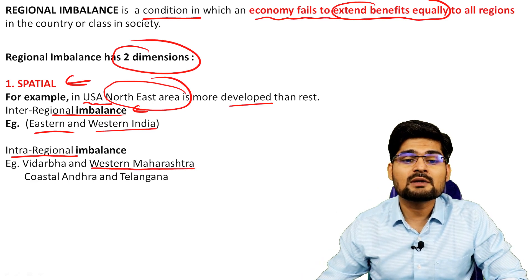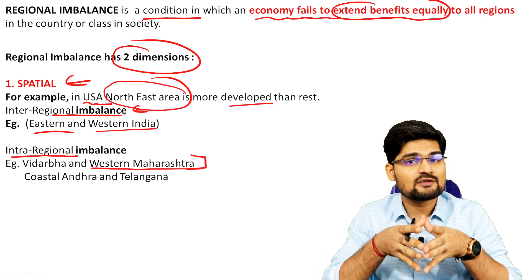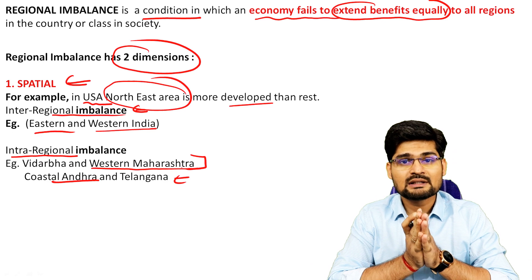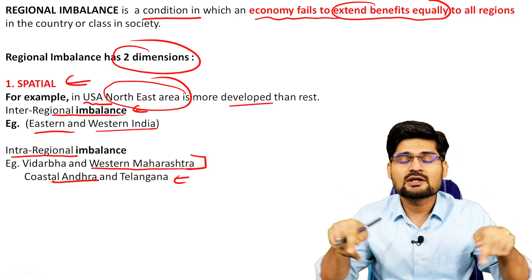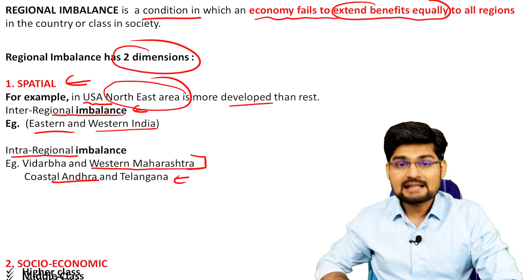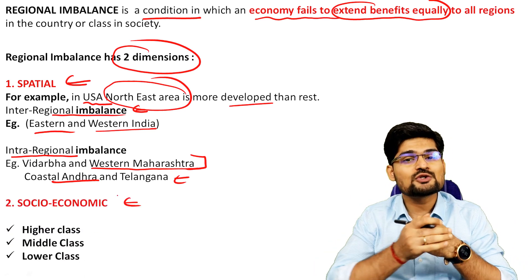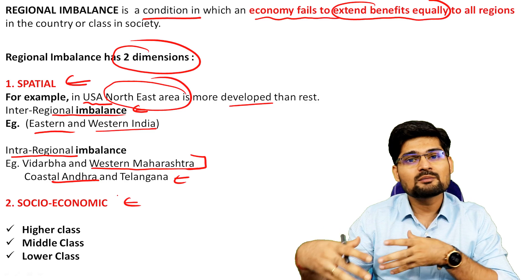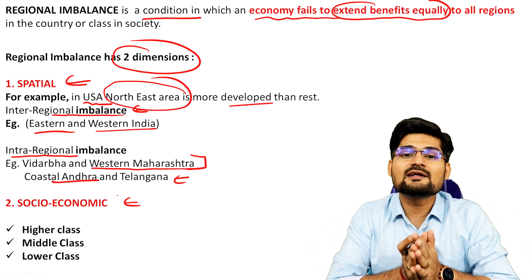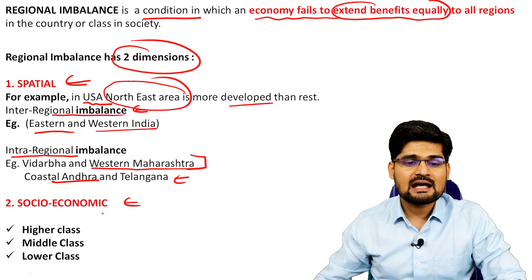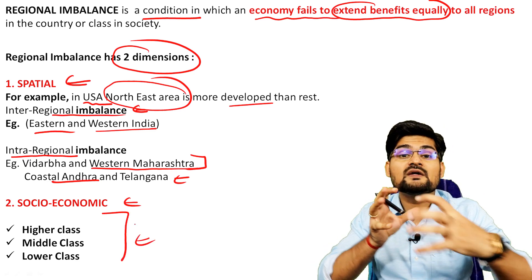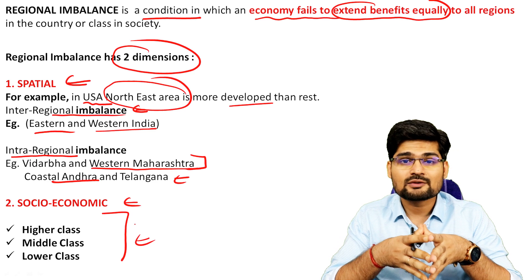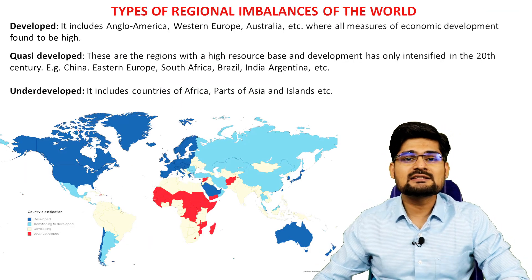Intra-regional imbalances also exist within the same region. For example, Vidarbha and western Maharashtra within the same state show different developmental levels. The coastal Andhra, Seemandhra, and Telangana debate is another case. The second dimension is socio-economic — talking about classes of people: high class, low class, middle class — hierarchies created on the criteria of social and economic orders, leading to disparities and inequalities.